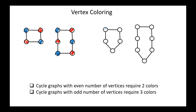In this graph we have a cycle of five vertices: blue, blue, red, red — and now we are stuck; we cannot color this last vertex with blue or red, so we need a third color. In a cycle graph with seven vertices: blue, blue, blue, red, red, red — again we need a third color. So in general, cycle graphs with an even number of vertices require only two colors (Chi of G equals two), and cycle graphs with an odd number of vertices require three colors (Chi of G equals three).